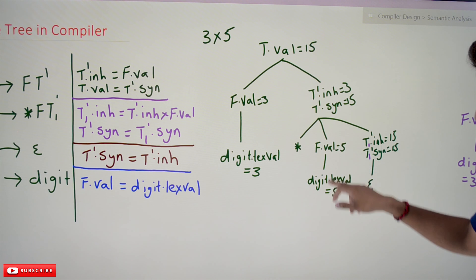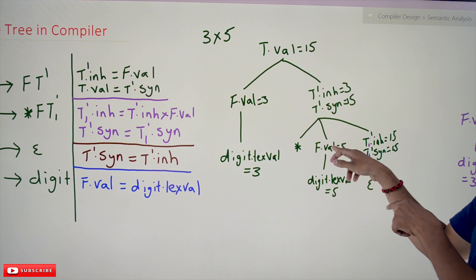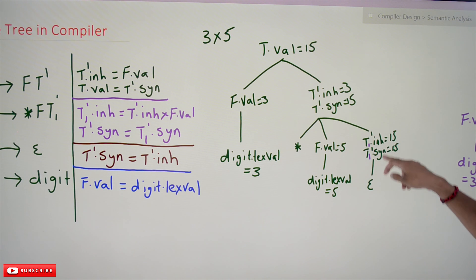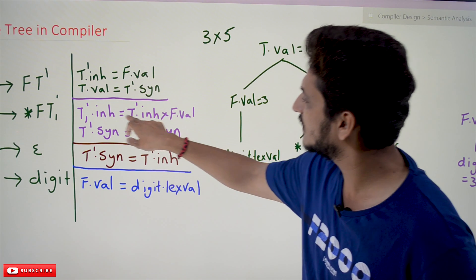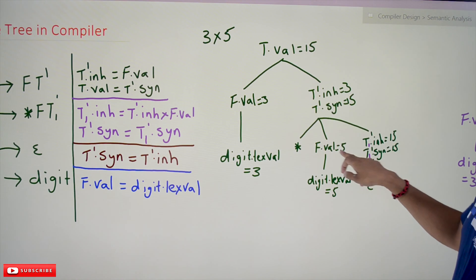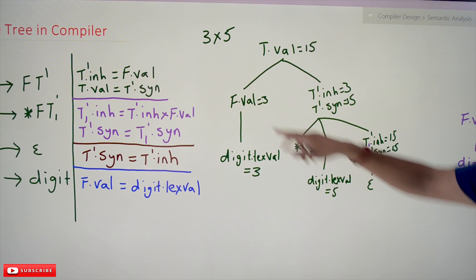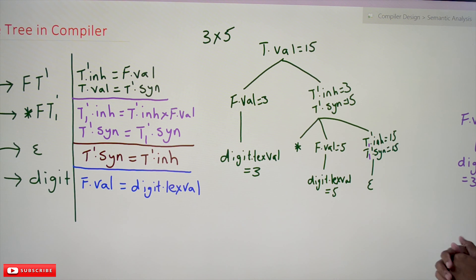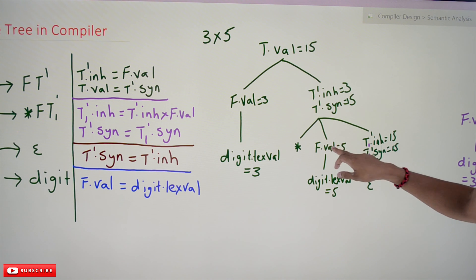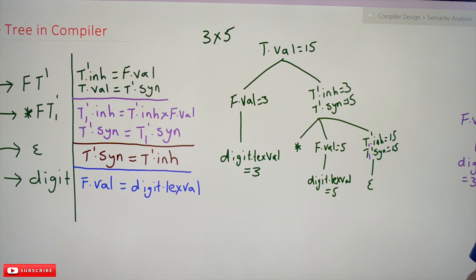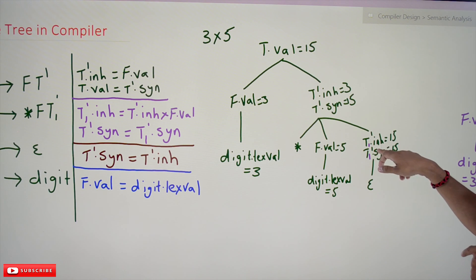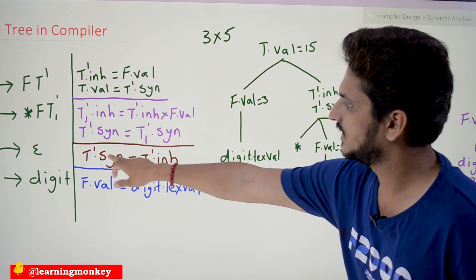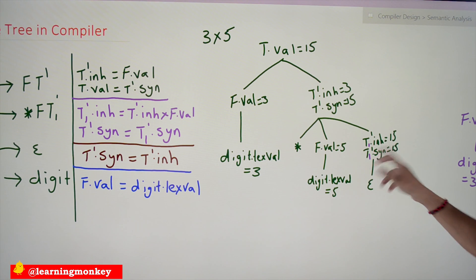When elaborating the star production F T', F evaluates first and digit.lex_value is given to F.val. To calculate T1'.inherited, it depends on both T'.inherited and F.val from the production. So before calculating T1'.inherited, F.val must be available and T'.inherited must be available. Otherwise you cannot calculate T'.inherited, and if you cannot calculate that, T1'.syn cannot be calculated either, since T1'.syn = T1'.inherited.